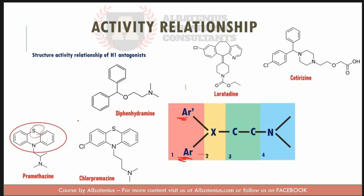If X is oxygen, it is known as the amino alcohol ether analogue. If X is carbon, it is known as the monoaminopropyl analogue. If X is nitrogen, then it is the ethylene-diamine derivative.